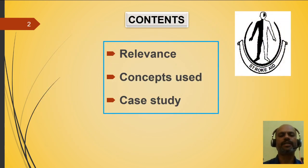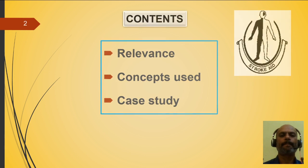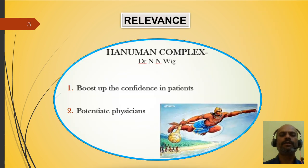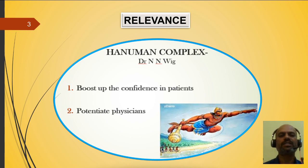Coming to the contents of this presentation: relevance, concepts used, and case study. Regarding relevance, we have the Hanuman Complex, which was termed by Dr. Renan Vig and is used predominantly in psychiatry. It has two objectives: one is to boost up the confidence in the patients, and number two is to potentiate the physicians. With such sharing of knowledge and clinical experiences, we will get to potentiate each other.